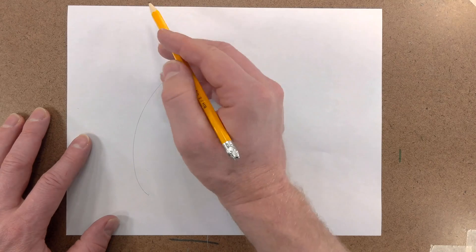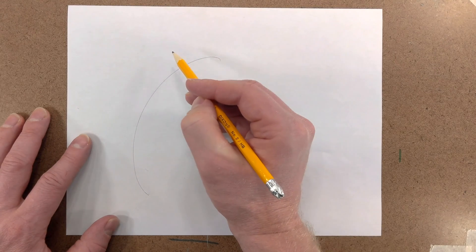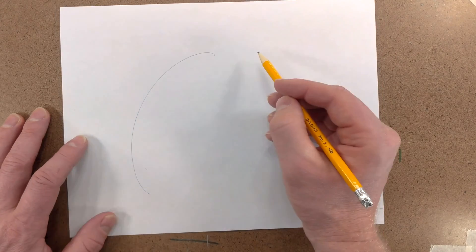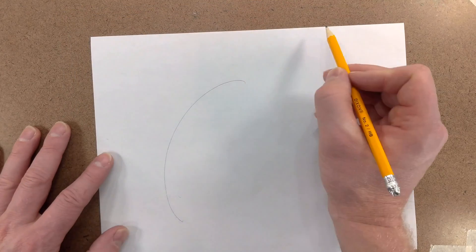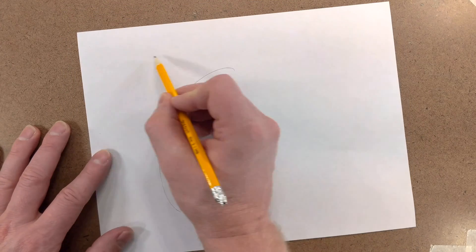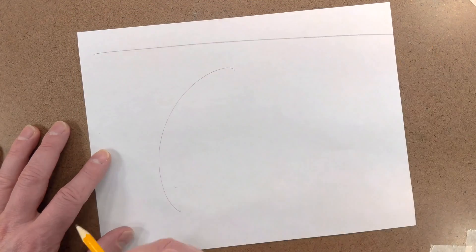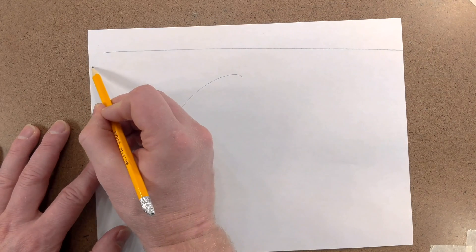So we want to have our wrist in a nice neutral position. We want to lock our elbow and we want to move from the shoulder. And we want to move in a decisive way. And that will give us much more straight lines.